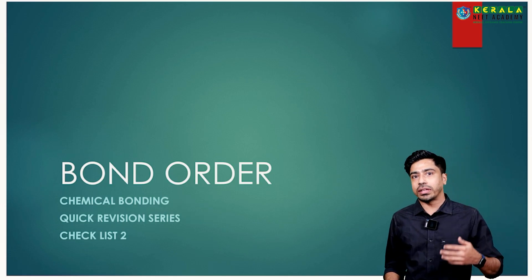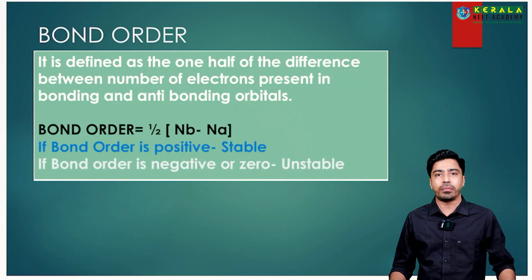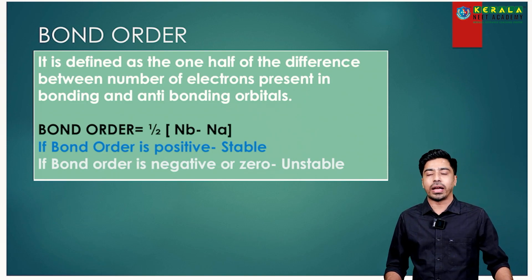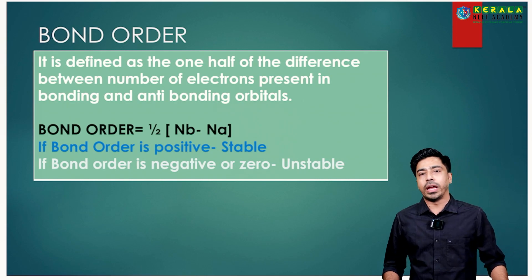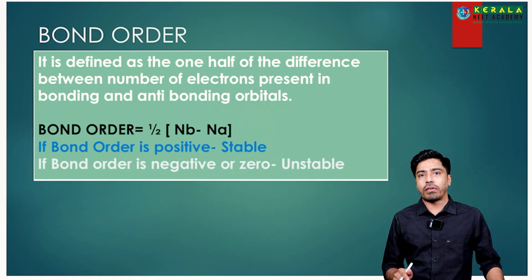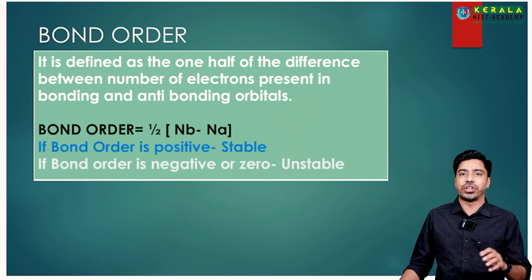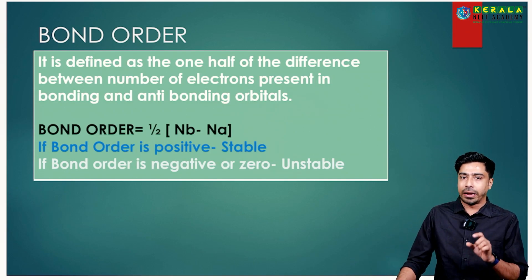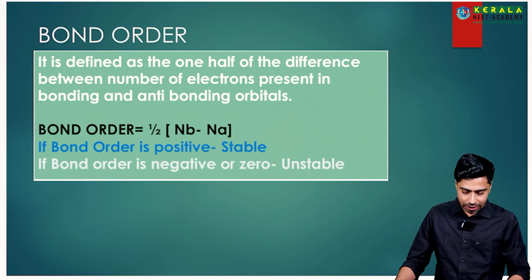By knowing the bond order, we can predict whether a molecule is stable or unstable. Bond order is defined as half of the difference between the number of bonding and anti-bonding electrons. The formula is: Bond Order = ½ × (Nb − Na), where Nb is the number of bonding electrons and Na is the number of anti-bonding electrons.